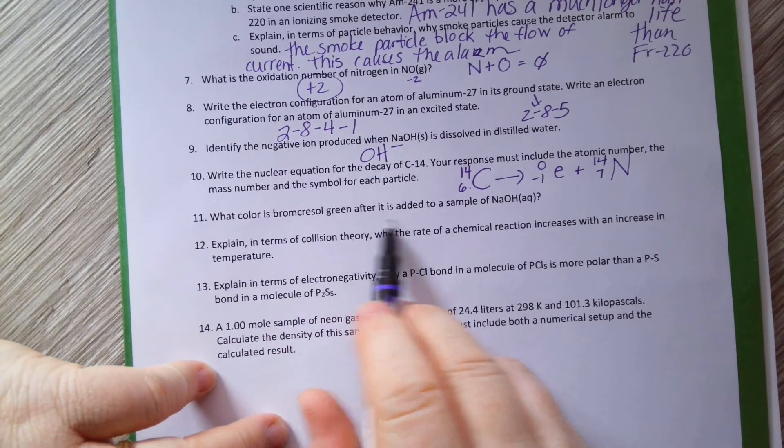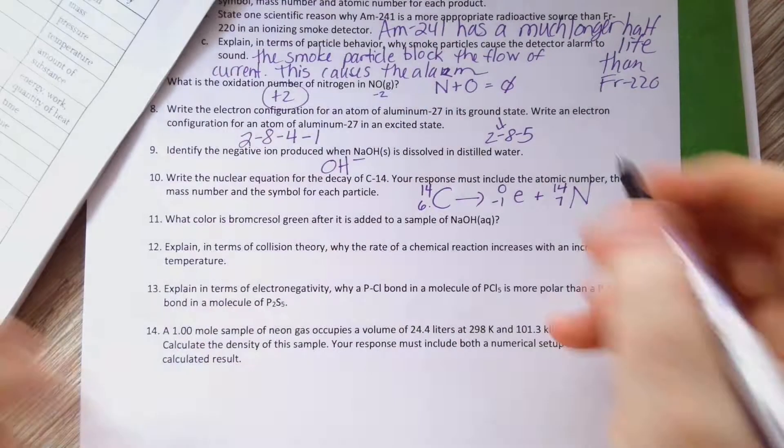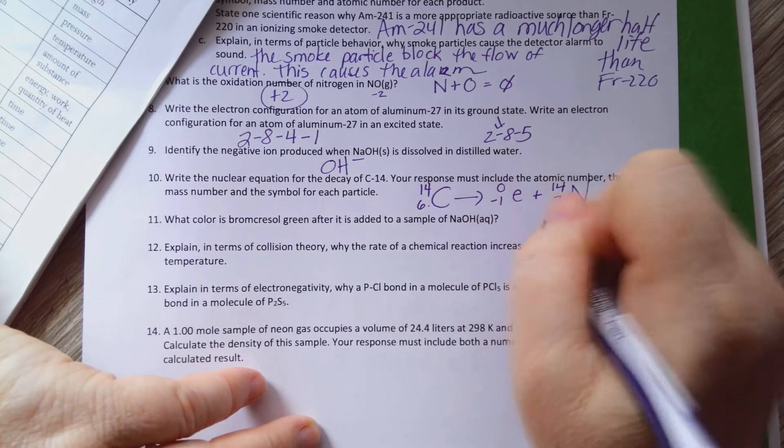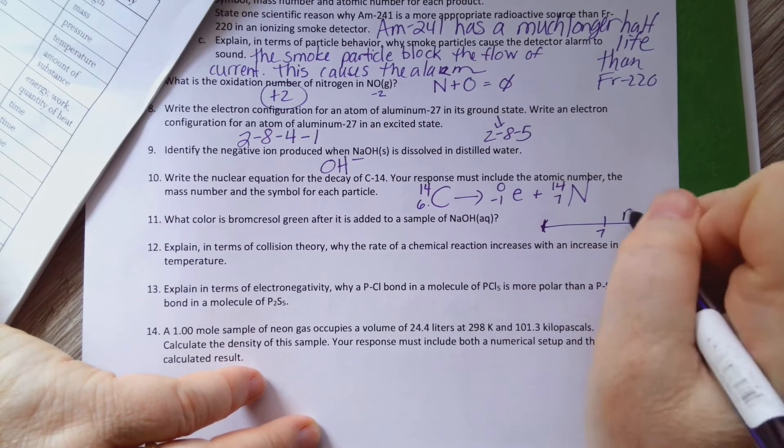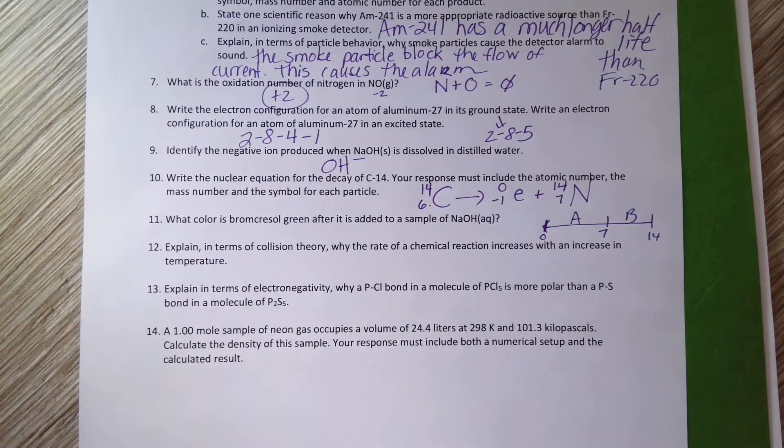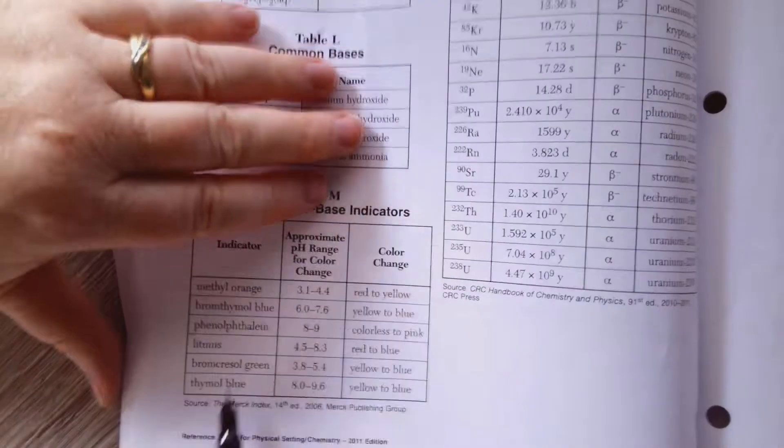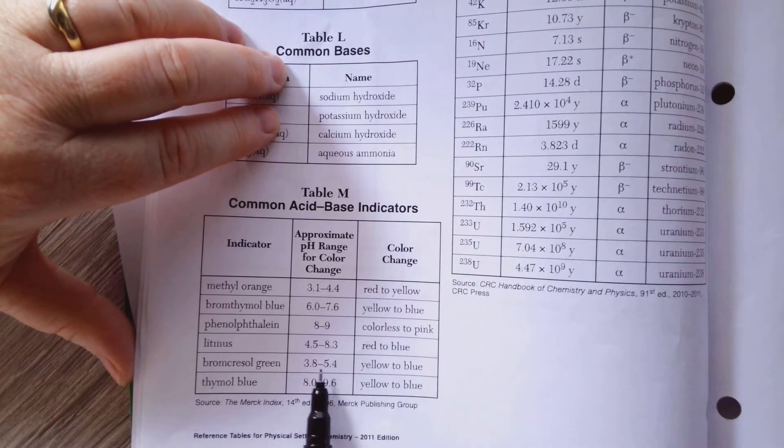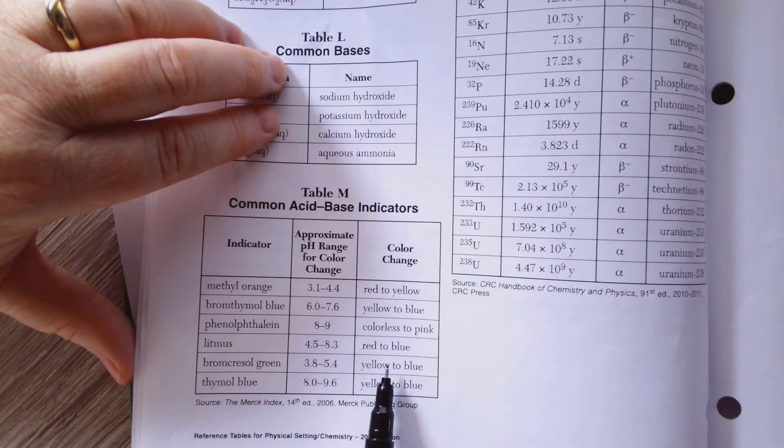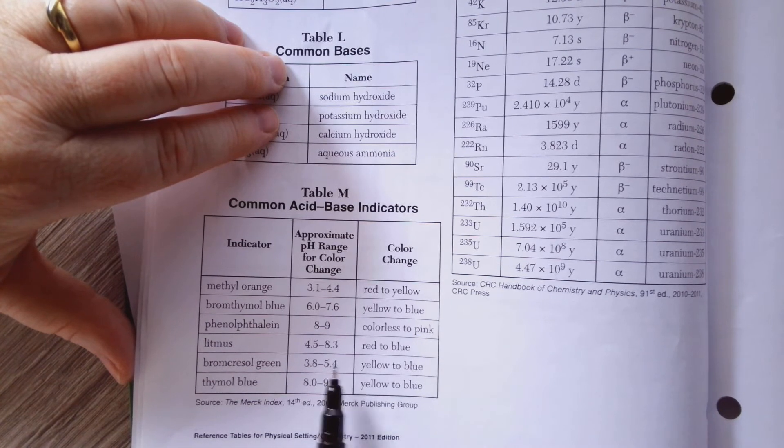What color is Bromocresol Green after it's added to this? If you forget what this is, remember, look here, it's a base. So a base, when we talk about the pH scale, 7 in the middle, bases are over here, acids are over here. So that you had to know. So I'm going to look back here. I'm going to look for Bromocresol Green. So Bromocresol Green right here. It means if I follow this color pattern, below 3.8 it is yellow, above 5.4 it is blue. Well, since a base is above 7, which is above 5.4, it will be blue.